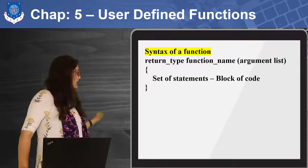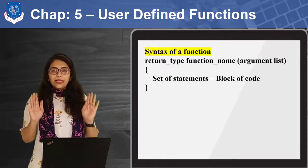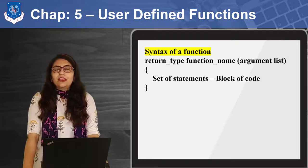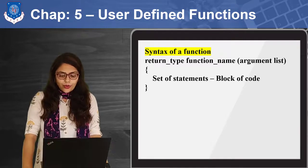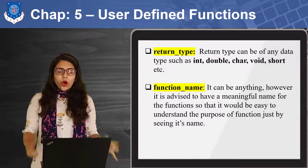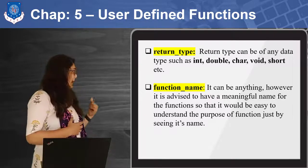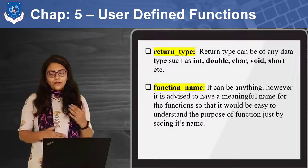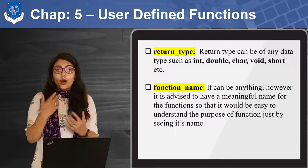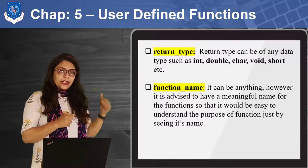If you don't understand this terminology, please be patient — I am going to explain it with examples. The first word is return type. What exactly is return type? It can be of type integer, float, character, short, void, etc. In short, it is a kind of data type. Whenever you write a function, it specifies what kind of output you are expecting from that function.